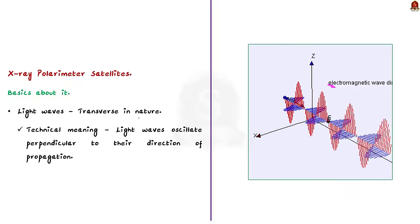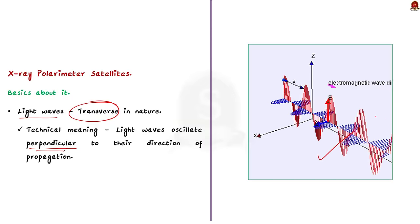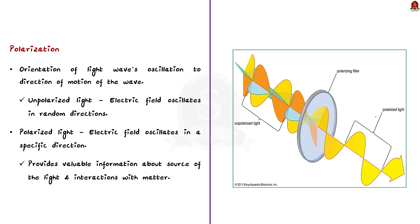Light waves, like all waves, are transverse in nature — they oscillate perpendicular to the direction of their propagation. Polarization is a fundamental property of light waves; it refers to the orientation of light waves relative to the direction of motion. In unpolarized light, the electric field oscillates in random directions. But in polarized light, the electric field oscillates in a specific direction. This property of light provides valuable information about the source of light and its interaction with matter.